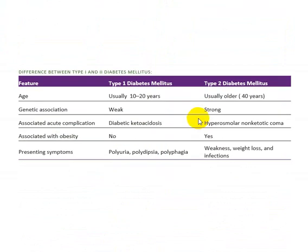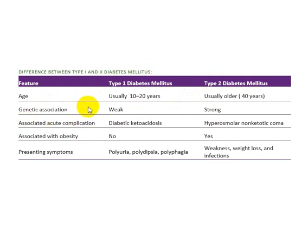The difference between Type 1 and Type 2 diabetes mellitus: Type 1 usually occurs at age 10 to 20 years, while Type 2 is usually older. In Type 1, the genetic association is weak, but in Type 2, the genetic association is very strong. Type 1 is associated with diabetic ketoacidosis, while Type 2 is associated with obesity.